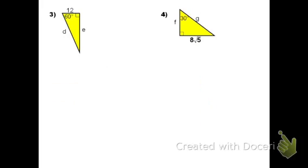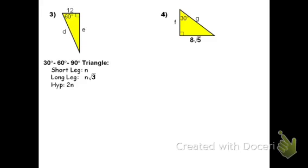Problem 3 has 60 degrees and 90 degrees, making it a 30-60-90 triangle. Short leg, long leg, hypotenuse — ratio n, n root 3, 2n. The 12-unit piece is away from where the 30 degrees would be, meaning it's the short leg, so n equals 12. For the long leg: n root 3 becomes 12 root 3. The hypotenuse is 2 times 12, or 24 units. D is away from the 90-degree angle — the hypotenuse — so D is 24 units. E is away from the 60-degree angle — the long leg — so E is 12 root 3 units.